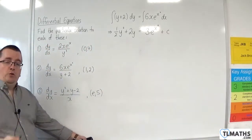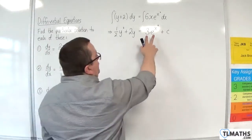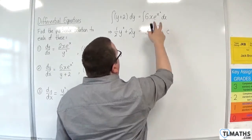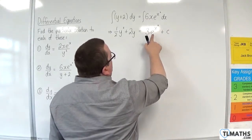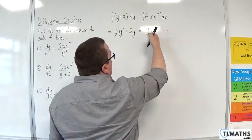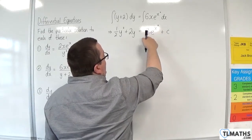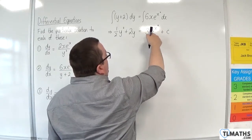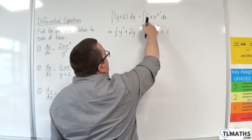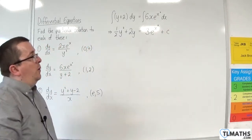Make sure you're convinced by that — does this differentiate back? Well, the interior function x squared differentiates and comes down to the front, so we'll have three lots of 2x times e to the x squared, which is the 6x e to the x squared. Good.